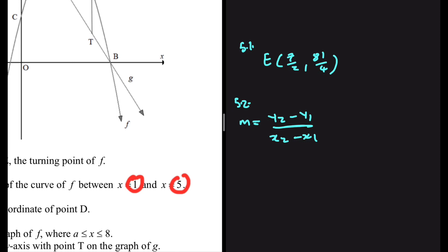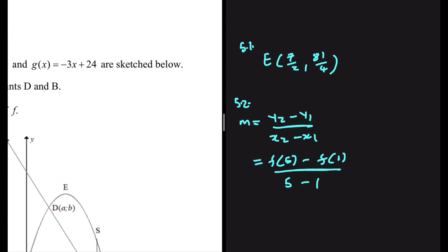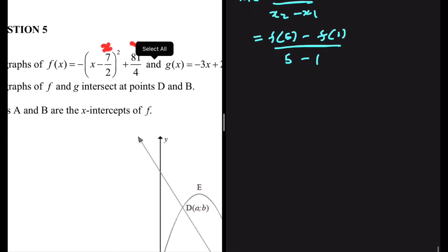We're just substituting into our function F of X. So the gradient is F of 5 minus F of 1 divided by 5 minus 1. Let's substitute into F of X. So F of 5: we have minus, and in place of X we substitute 5, then minus 7 divided by 2, everything to the power 2, plus 81 divided by 4.